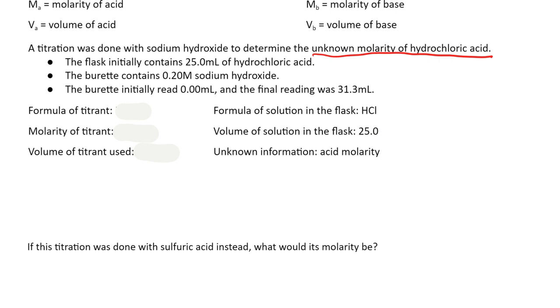Now that means that the titrant was the base. So the formula of the titrant, it says we used sodium hydroxide which is NaOH, and it tells me we knew that molarity which is 0.20. Then it tells me we started at the top with 0.00 milliliters and at the end it read this. That tells me I used 31.3 milliliters of the base in order to do the titration.